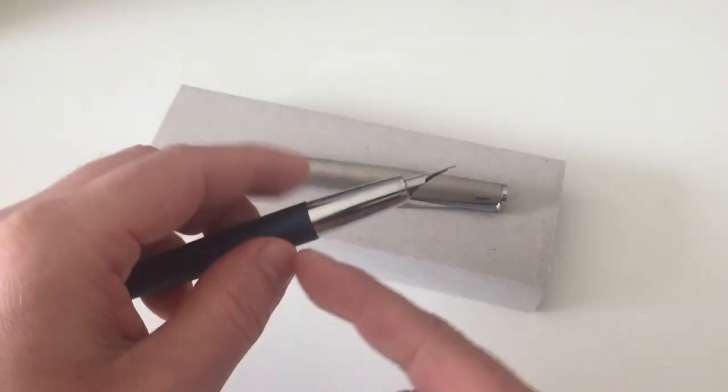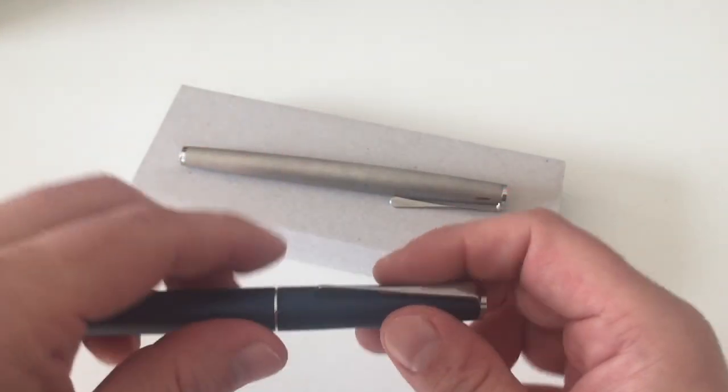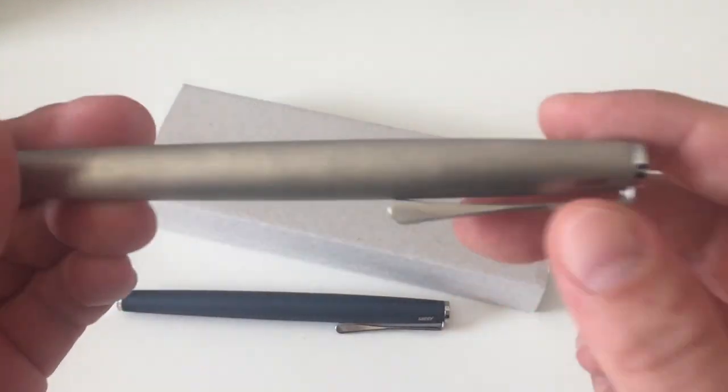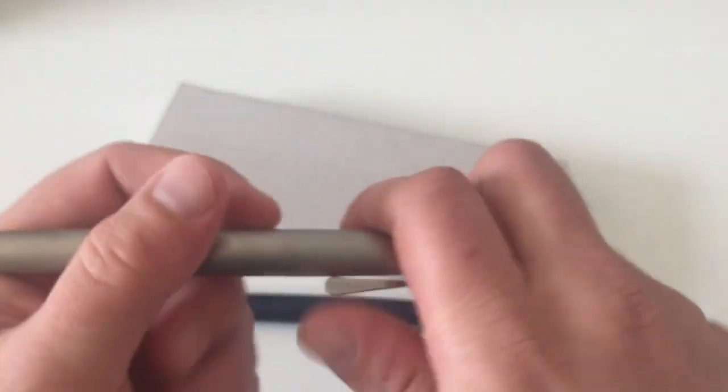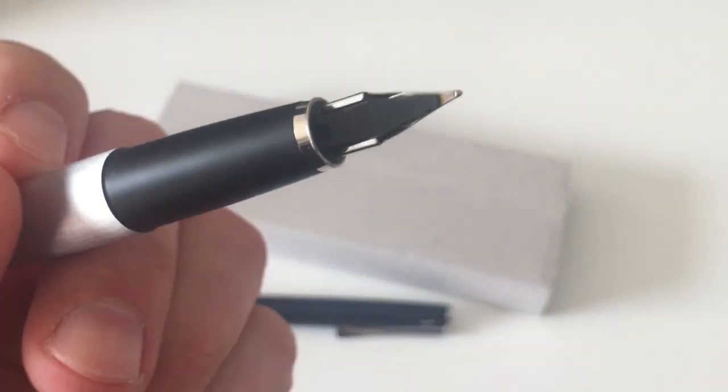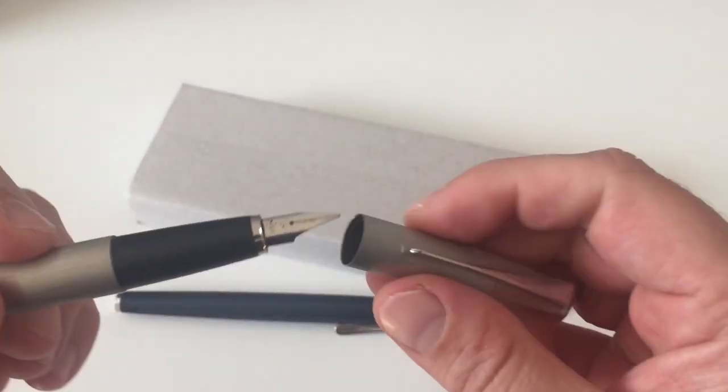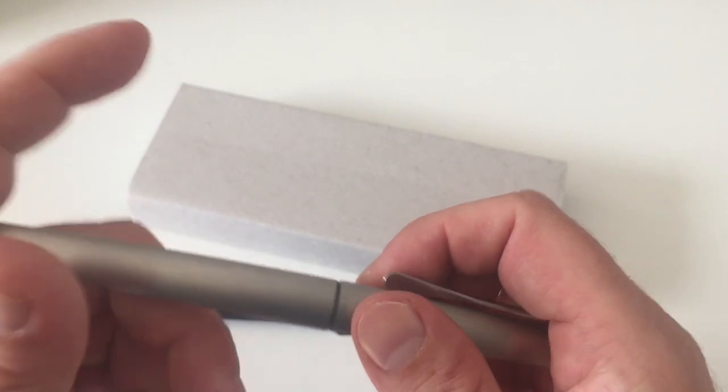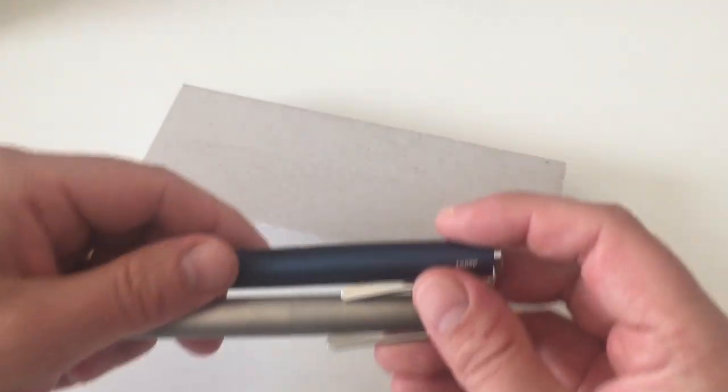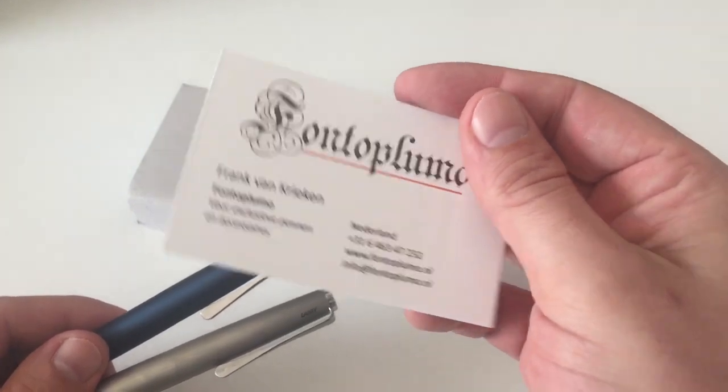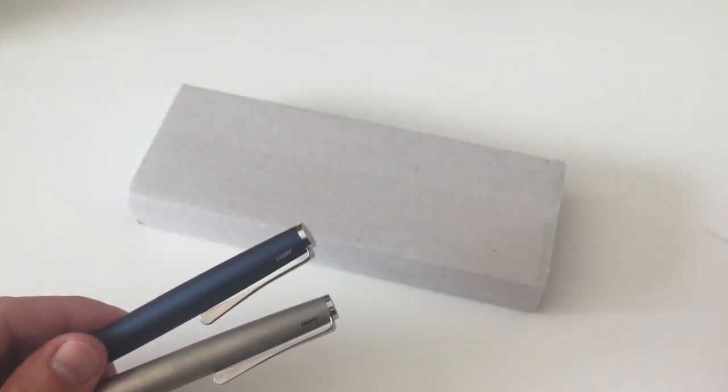Now most Lamy Studios do have this chrome section. The Lamy Studio comes also in black and palladium, but there is one Lamy Studio, the brushed steel, that comes with a black rubbery plastic section. I really wanted to have a look at the difference between those two pens, which is why I asked Frank to send me the pen for review.